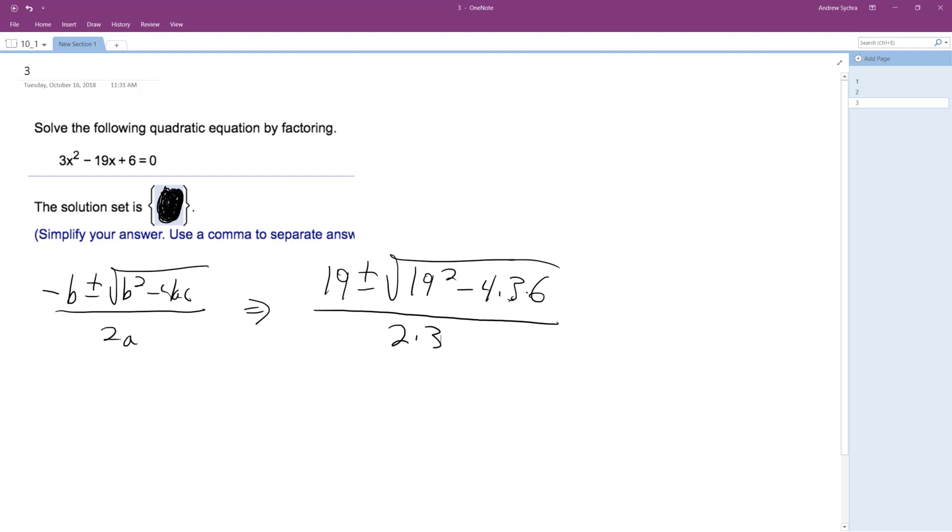19 squared, I have no idea what that is. 19 squared is 361, so we got 19 plus or minus square root of 361 minus 4 times 3 times 6. 12 times 6, I think that's like 84 or something.